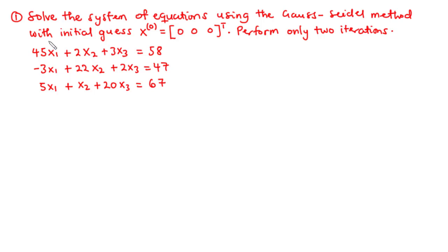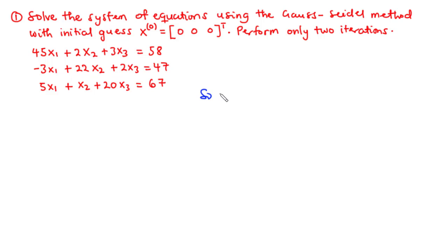We have a question here. We are asked to solve the system of equations using the Gauss-Seidel iteration method with initial guess x(0) = [0, 0, 0], and we are asked to perform only two iterations. So we have this system of equations — let's try our hands on it.